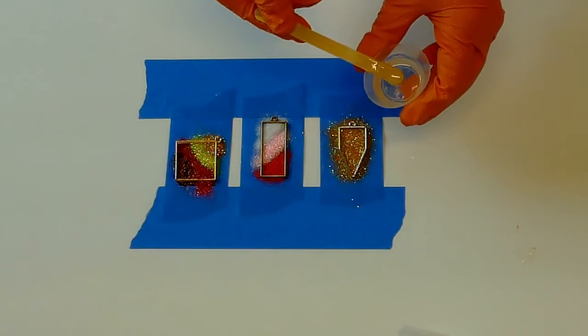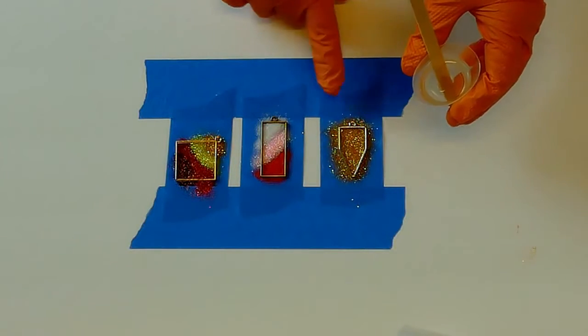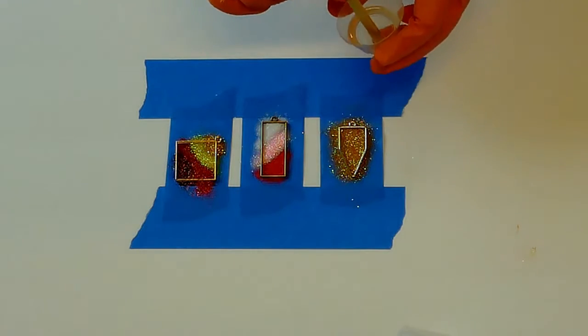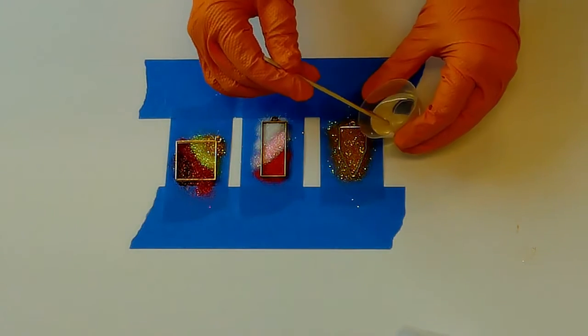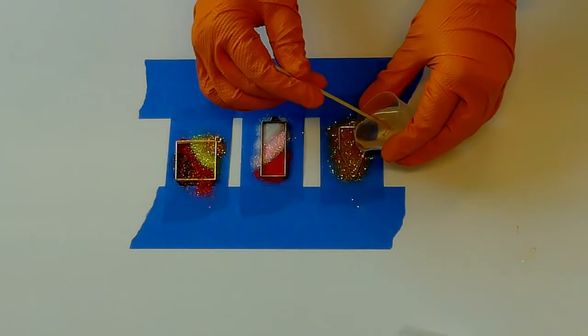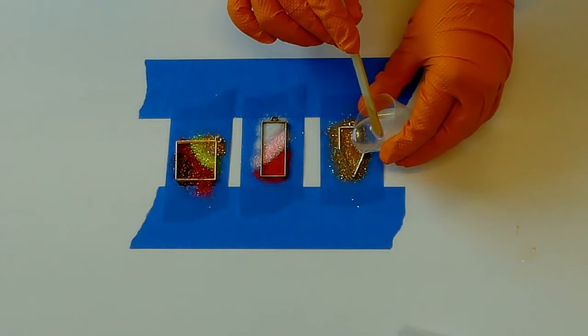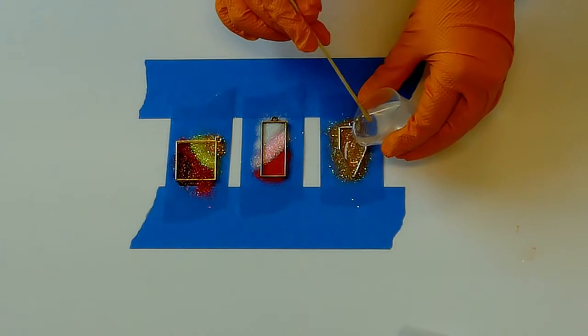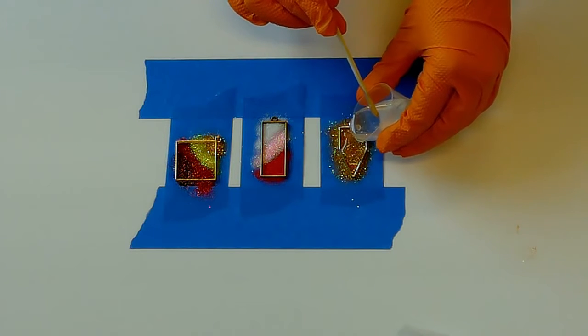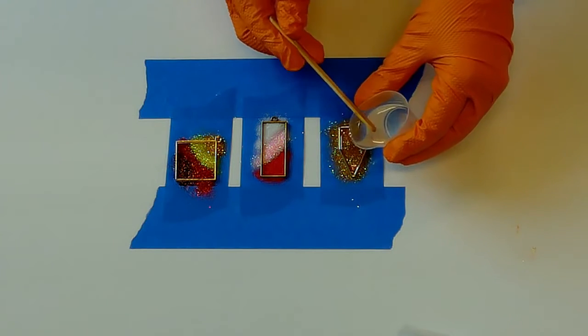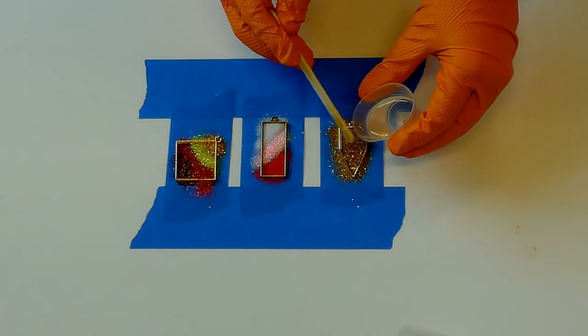Carefully pour or spoon the mixture into the pendants. Be careful not to overflow the frame. Fill it just to the top of the frame to make a flat pendant, or use the stick to add a little bit at a time to get a dome top.